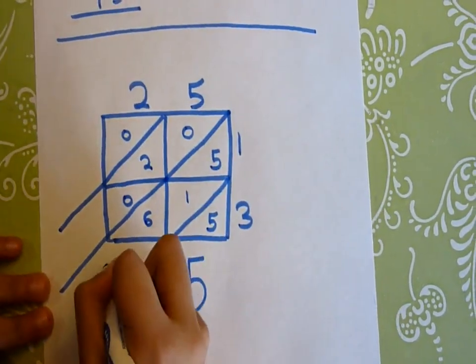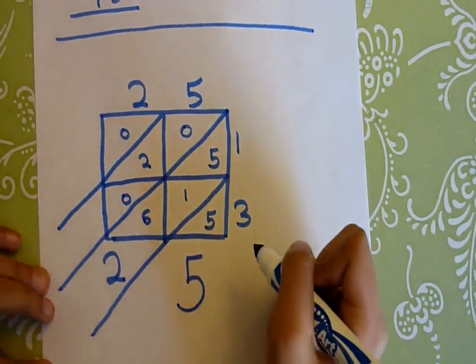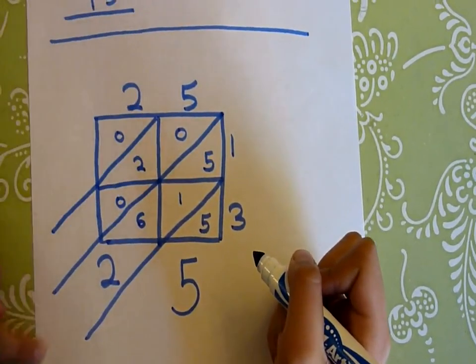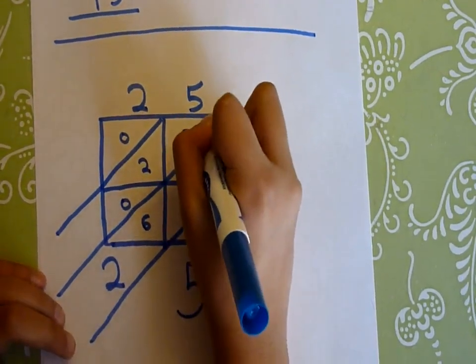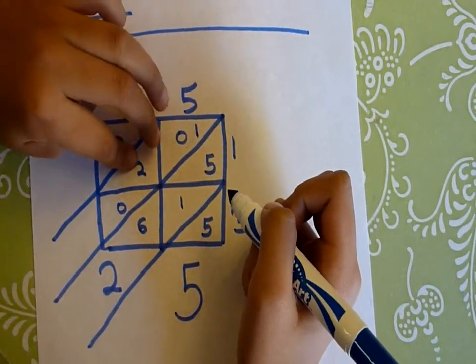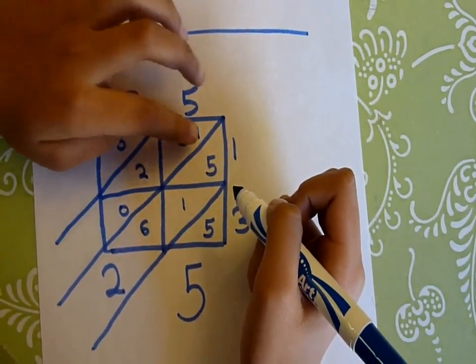So you put the two here and then you carry the one in this column, so I put the one right there. Now I do one plus two, that's three, and that's a zero so that's just three.